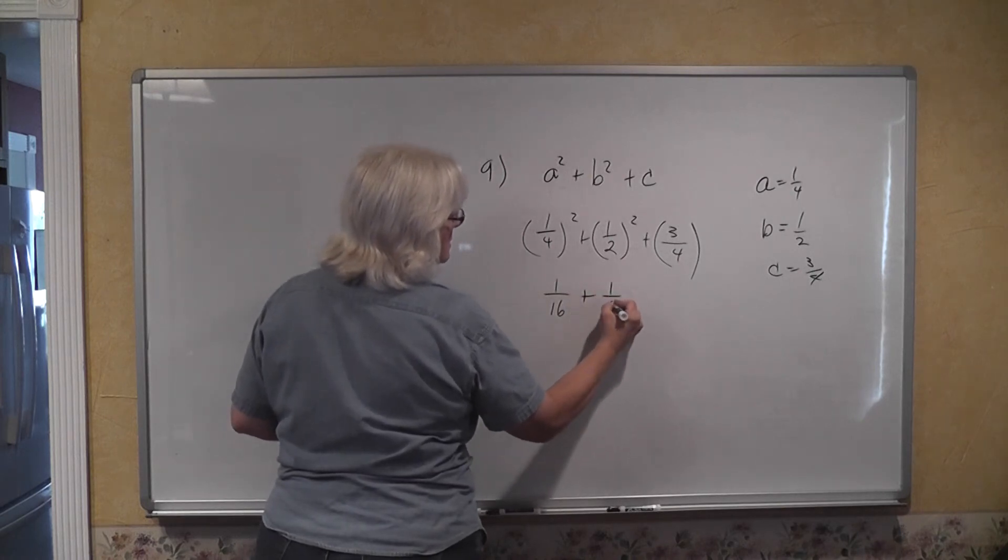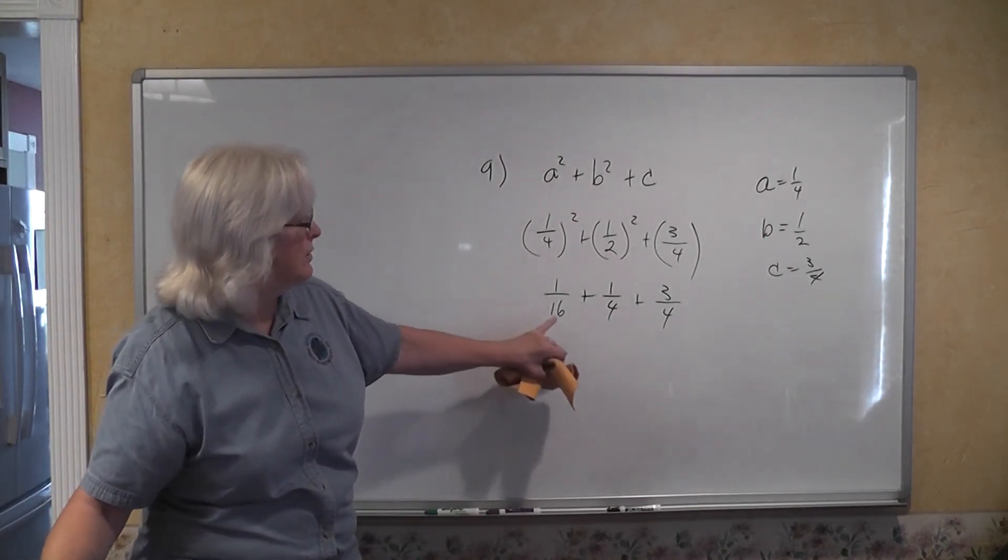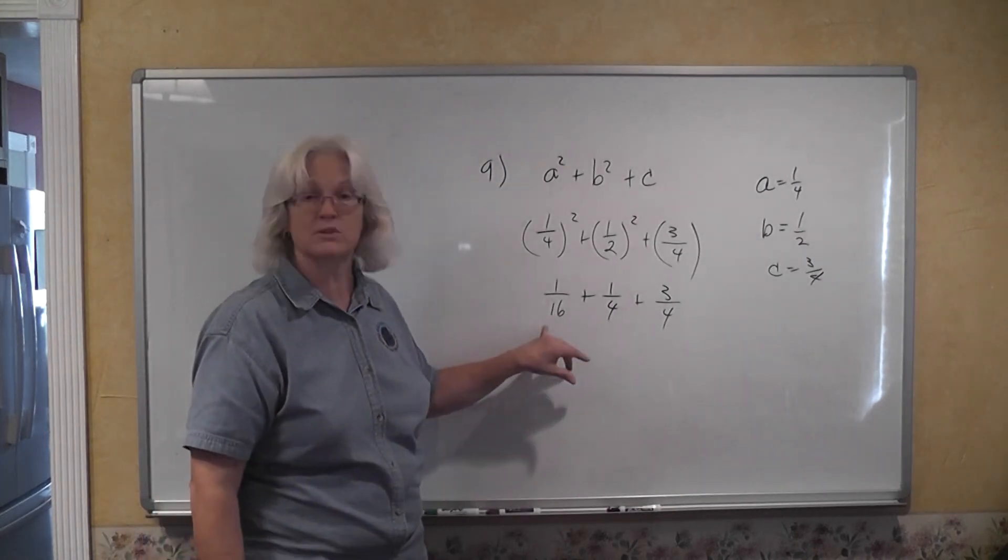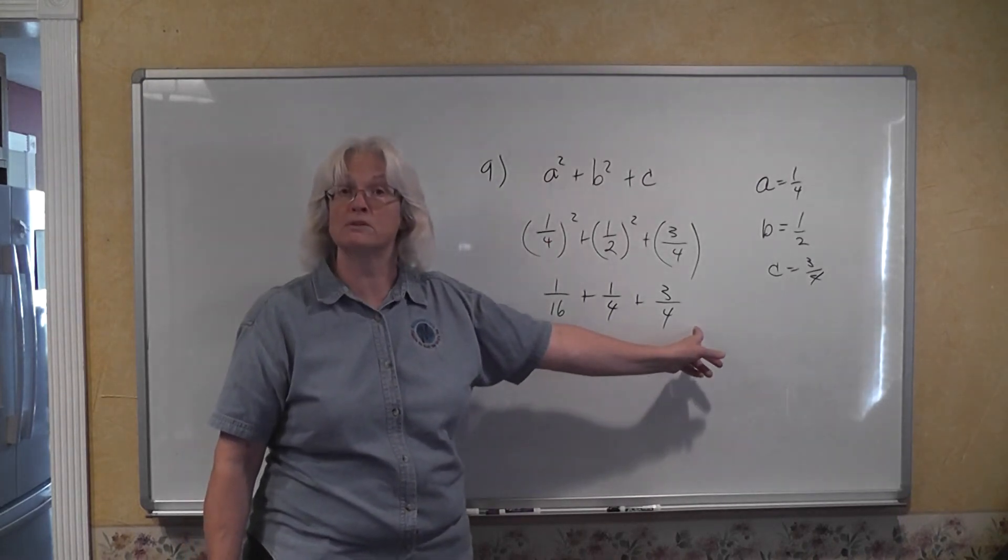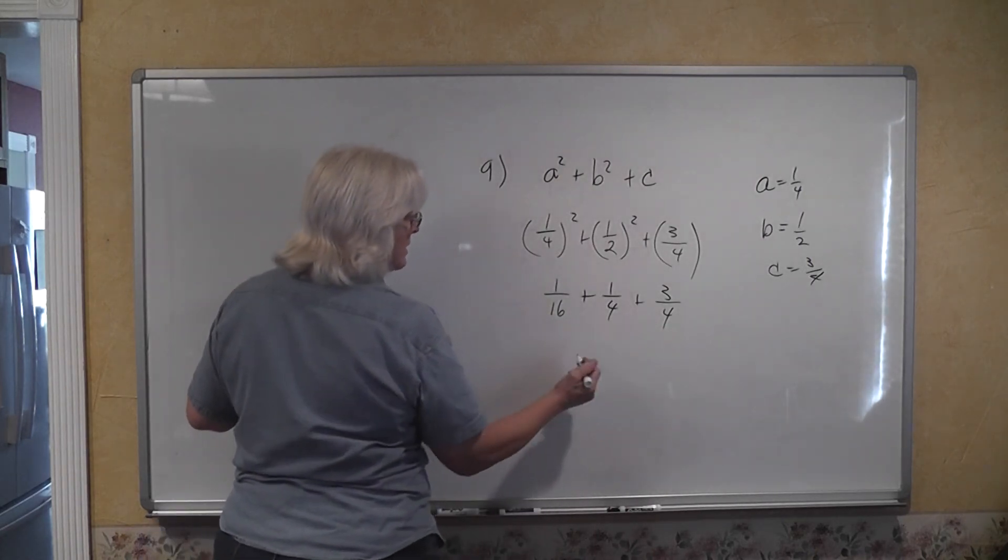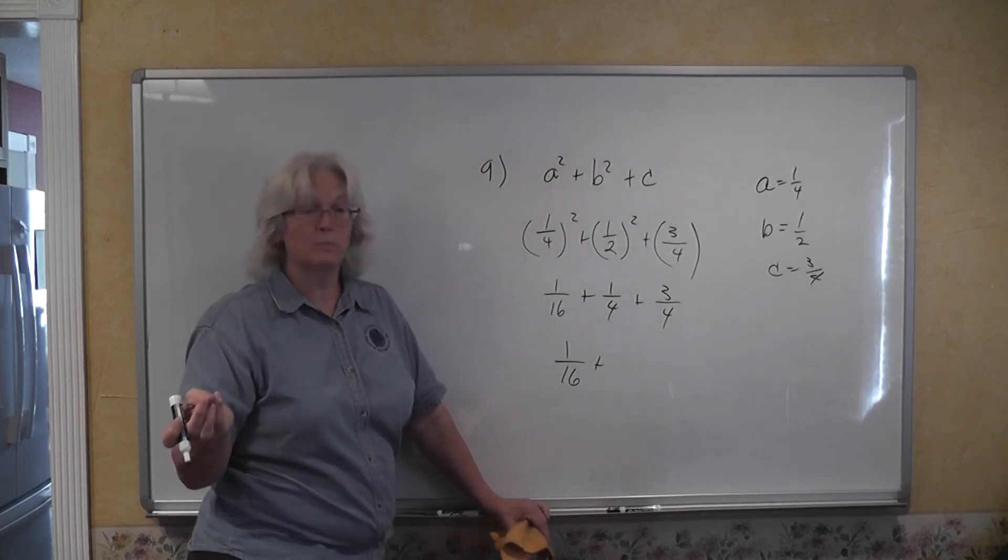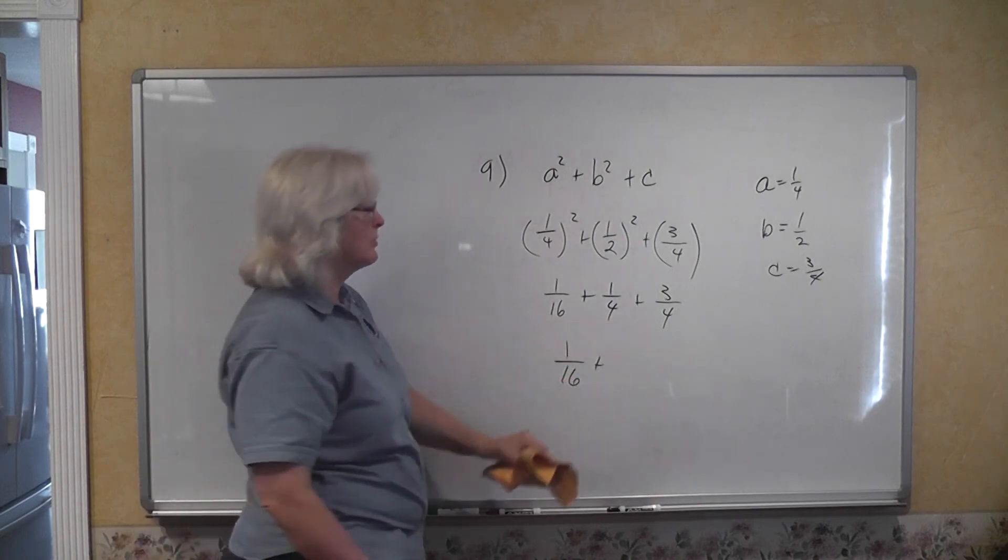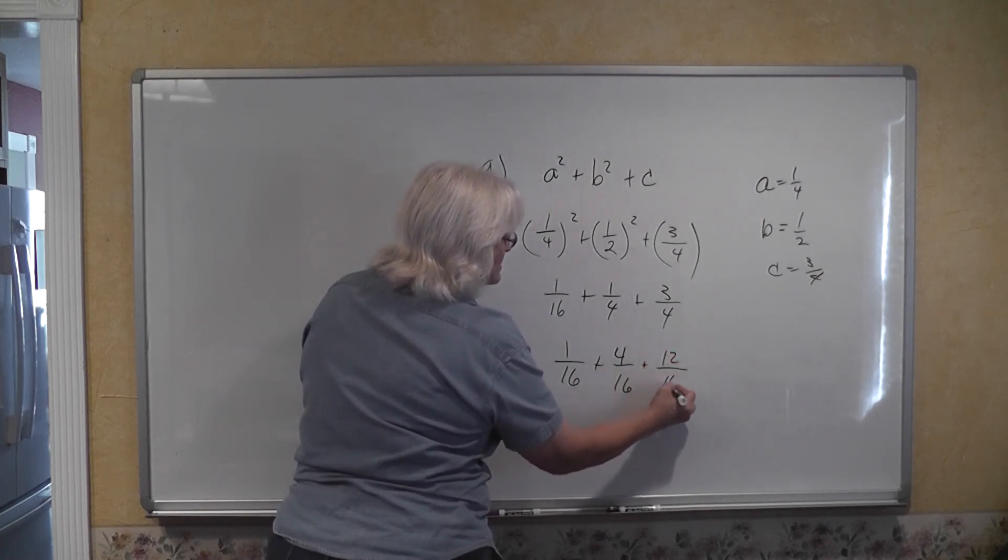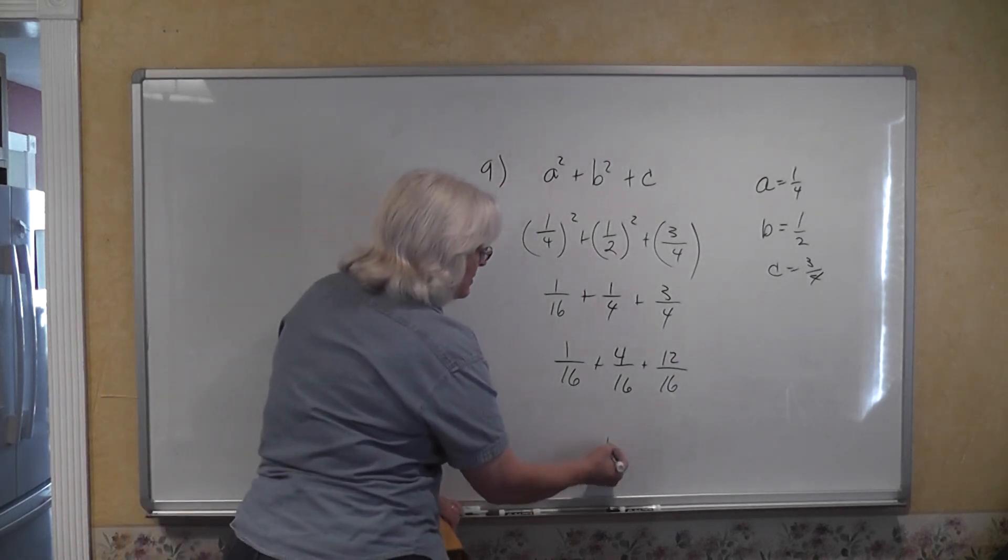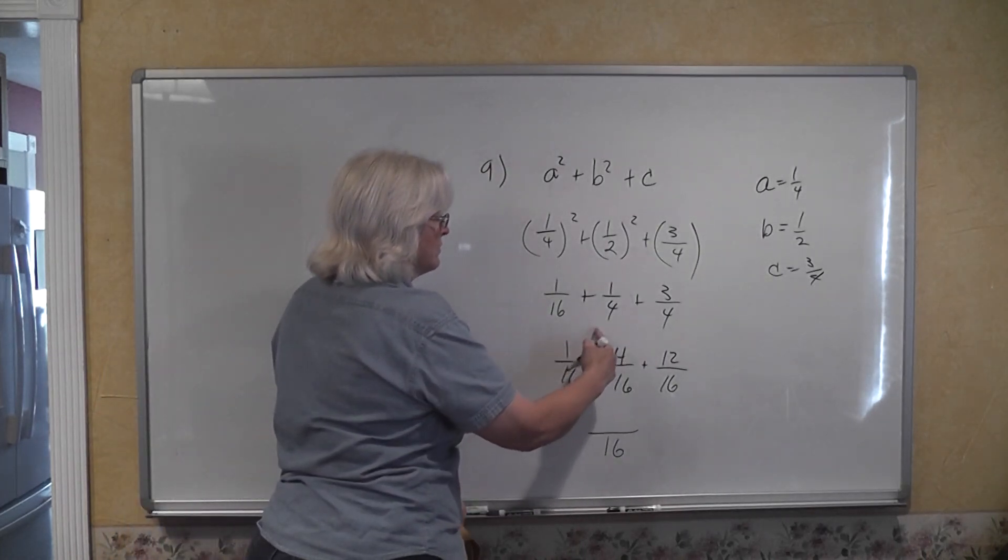So back to what we're talking about, 1 sixteenth plus 1 fourth plus 3 fourths. What we can do is rewrite all of these with a common denominator, which is going to be sixteenths. I immediately see that our answer is going to be 17 sixteenths because 1 fourth plus 3 fourths is equal to 1. But let's go ahead and rewrite these with a common denominator. We have 1 sixteenth plus we're going to multiply by 4 over 4. So we have 4 sixteenths plus 12 sixteenths. We now have a common denominator and we arrive at our numerator by adding the separate numerators together. 1 plus 4 is 5 plus 12 is 17.